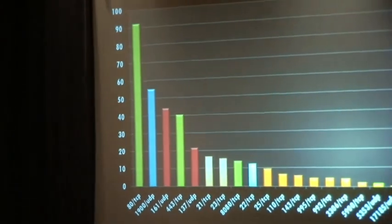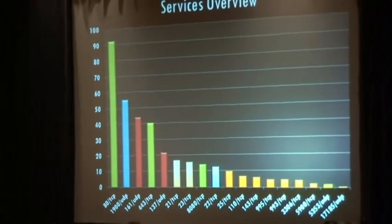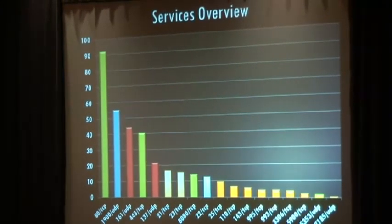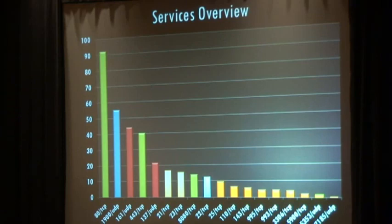Going down the service list: 8080 and 443 are next. Then port 161 UDP — that's SNMP with the public read community string — with 43 million unique IPs having SNMP open with 'public'. SNMP tells you all kinds of crazy things about systems that you don't want exposed to the world, let alone across that many devices.